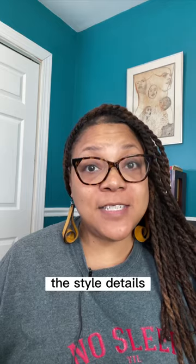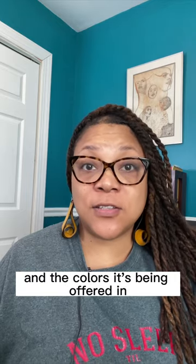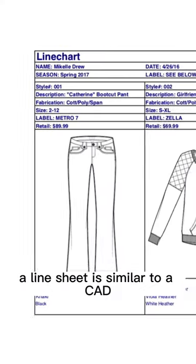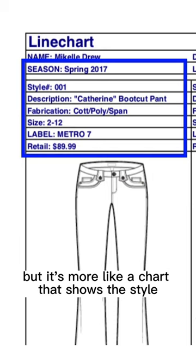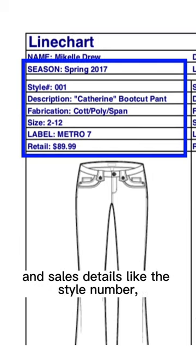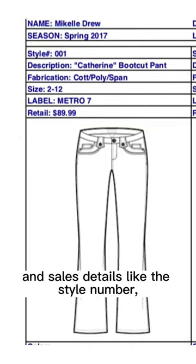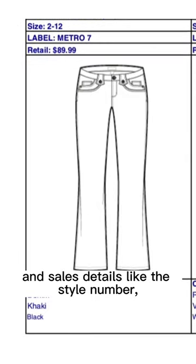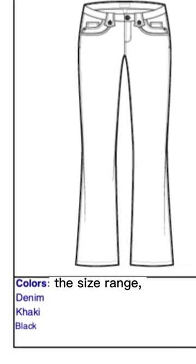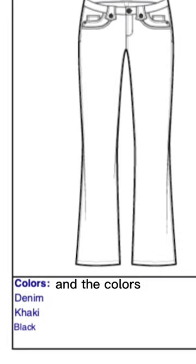It shows the style details and the colors it's being offered in. A line sheet is similar to a CAD, but it's more like a chart that shows the style, usually just the front view in black and white, and sales details like the style number, the price, the label, the size range, and the colors.